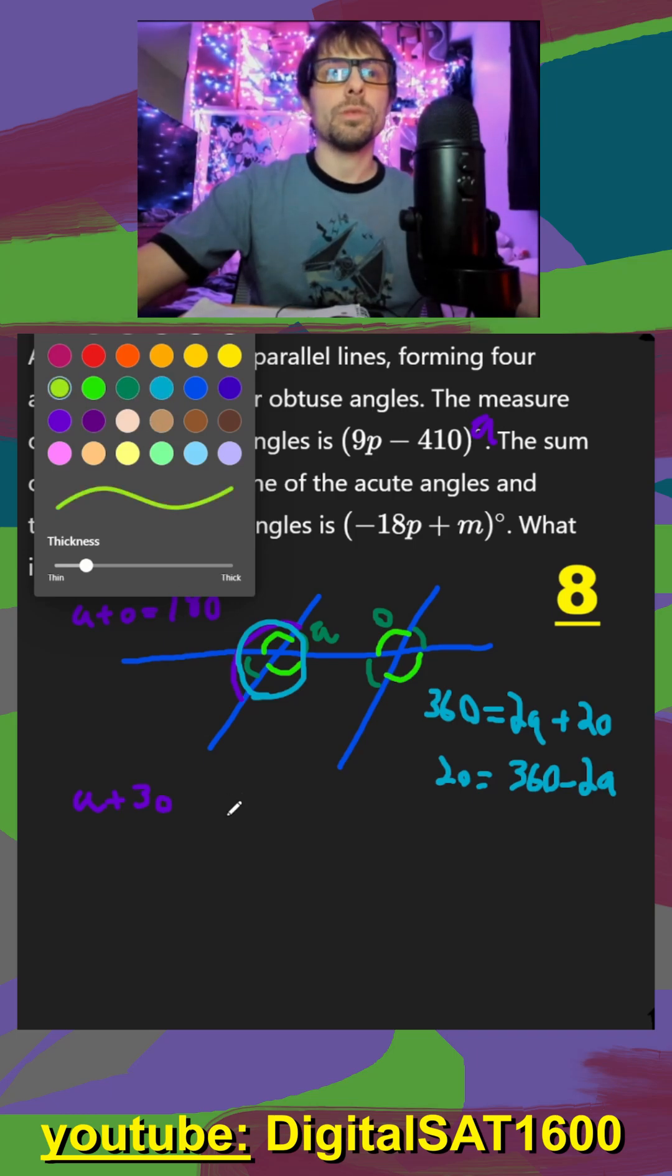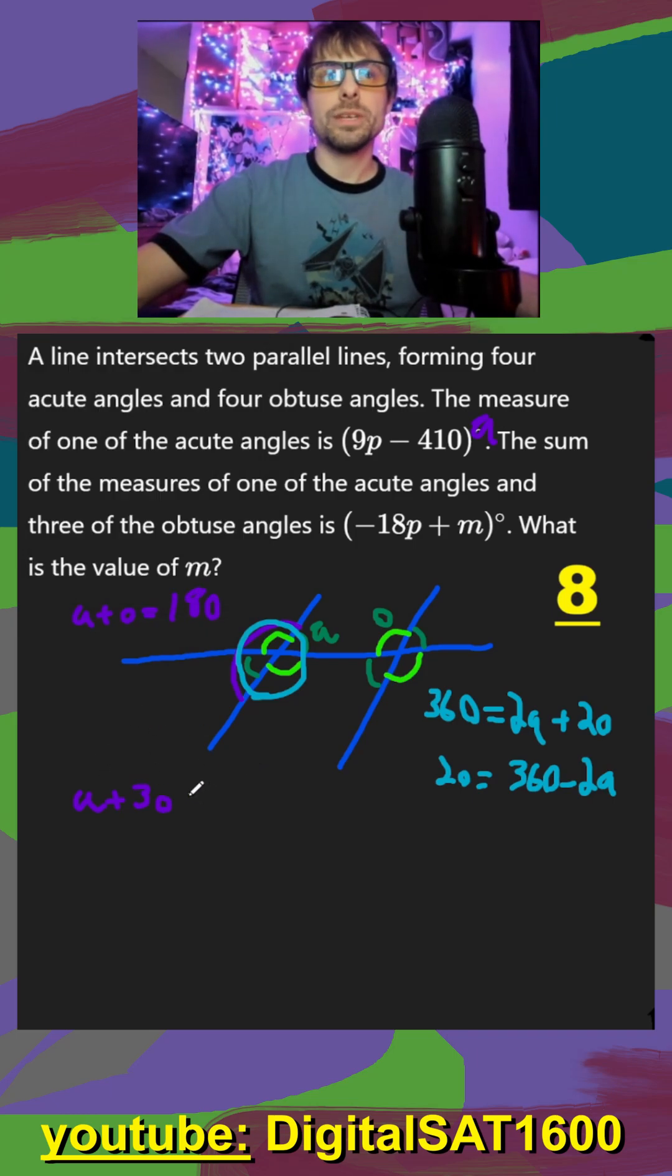And what this all adds up to remember, that A plus three O is going to be equal to A plus O, which we have here, plus two O, which we have here.